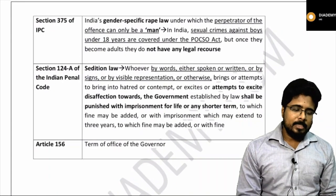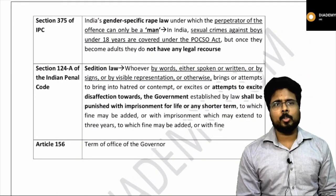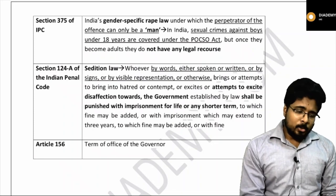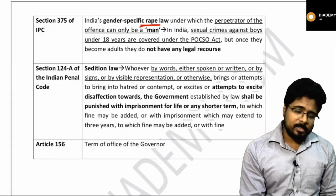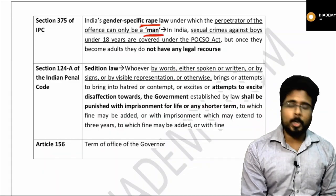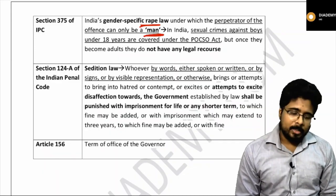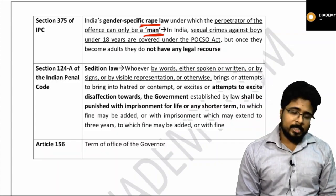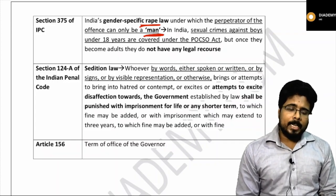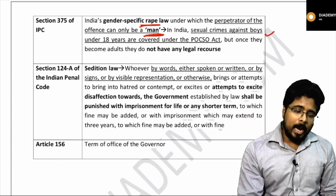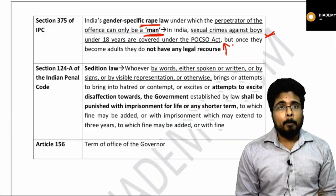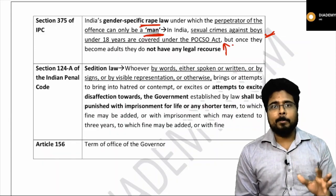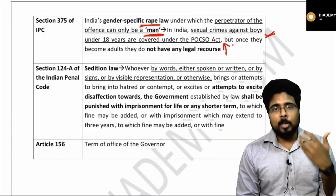Section 375 of IPC was in news. India's gender-specific rape law under which the perpetrator of the offense can only be a man. Sexual crimes against boys under 18 years are covered under the POCSO Act, but under Section 375, it is only against men — that is, it is only for women.